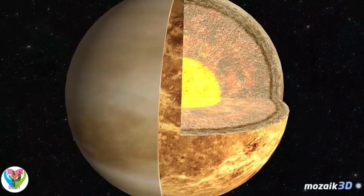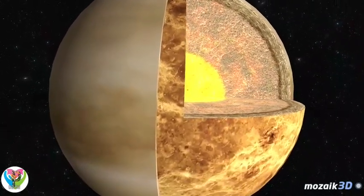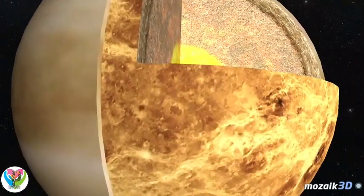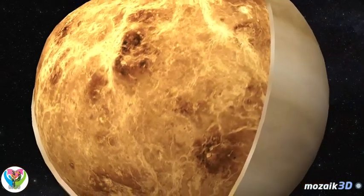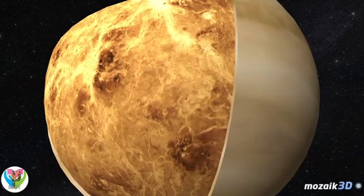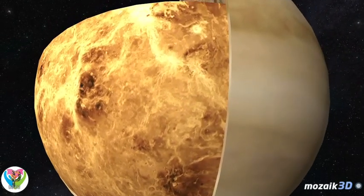The surface is barren and rocky. There are few impact craters, but several active shield-like basalt volcanoes. Venus has no plate tectonics. Its surface is covered with translucent, highly reflective clouds of sulfuric acid.